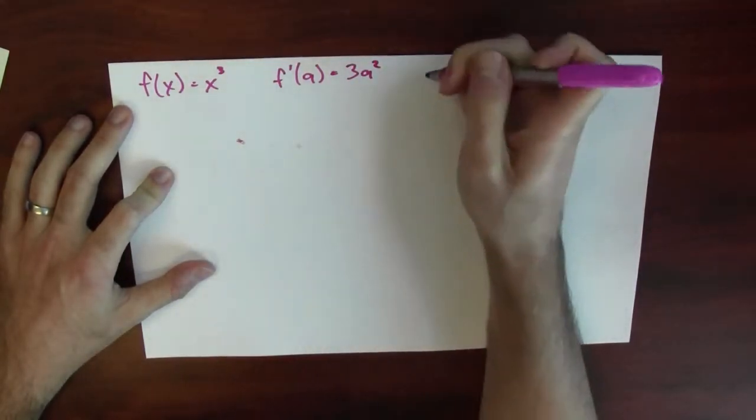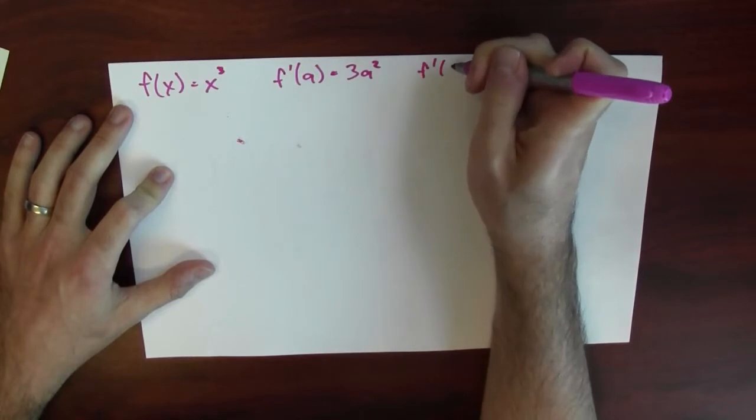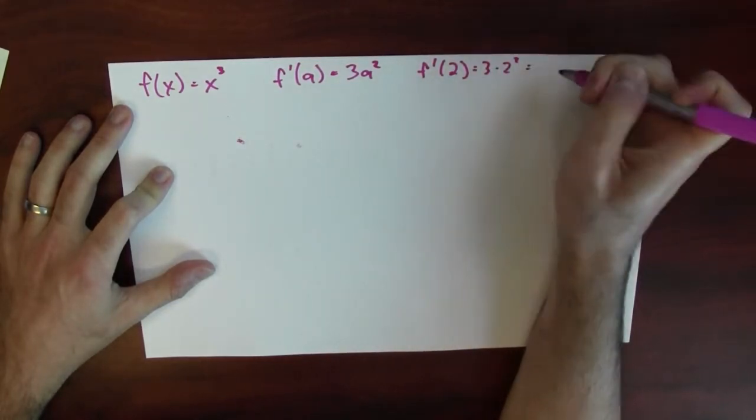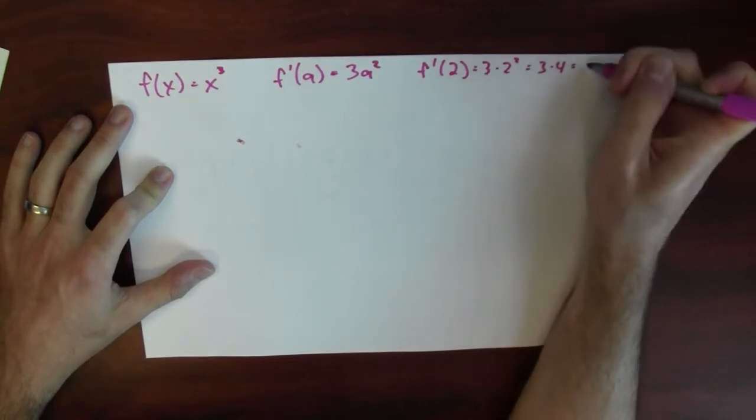Now I could plug in a number for a. I could look at say f prime at 2, which is 3 times 2 squared, which is 3 times 4, which is 12.